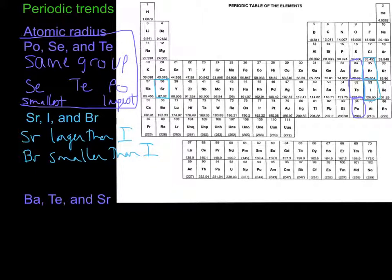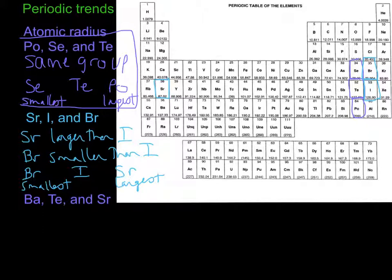So if we're going to rank these, bromine is the smallest, the largest is going to be strontium, and in between that's where we're going to have iodine. Now try the next one — pause it and give it a go. So let's find everybody again. We have barium, tellurium, and strontium.